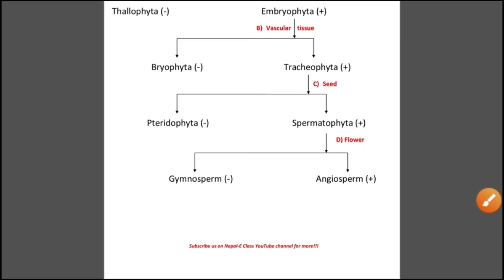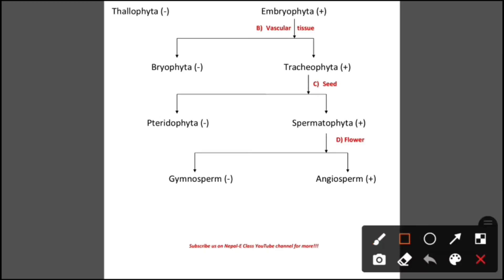This is the fourth basis of classification — on the basis of presence and absence of flowers. If flowers are present in a plant, we include it under angiosperm.